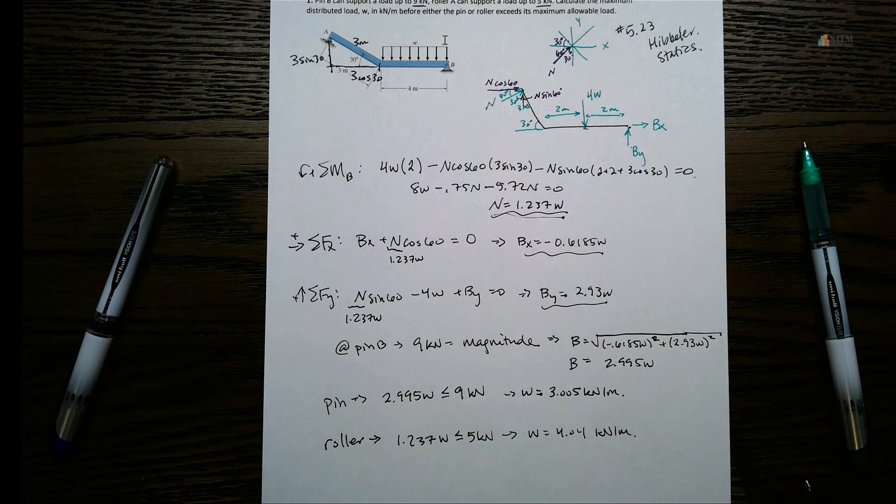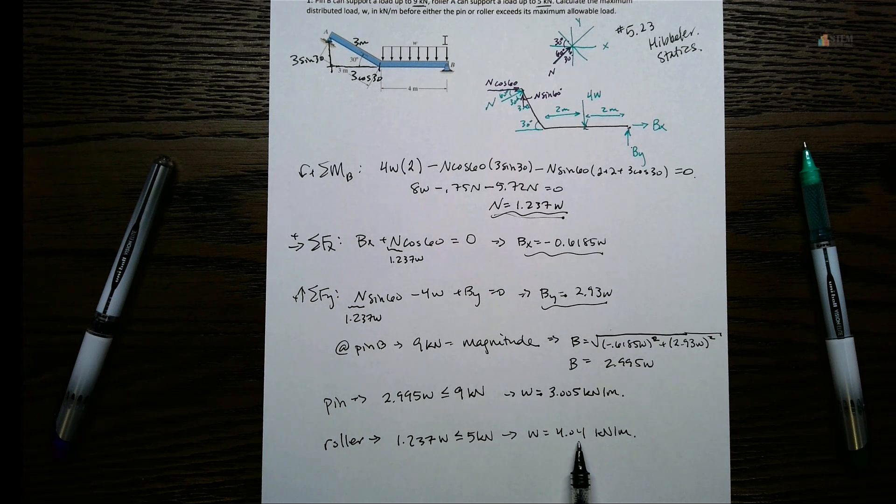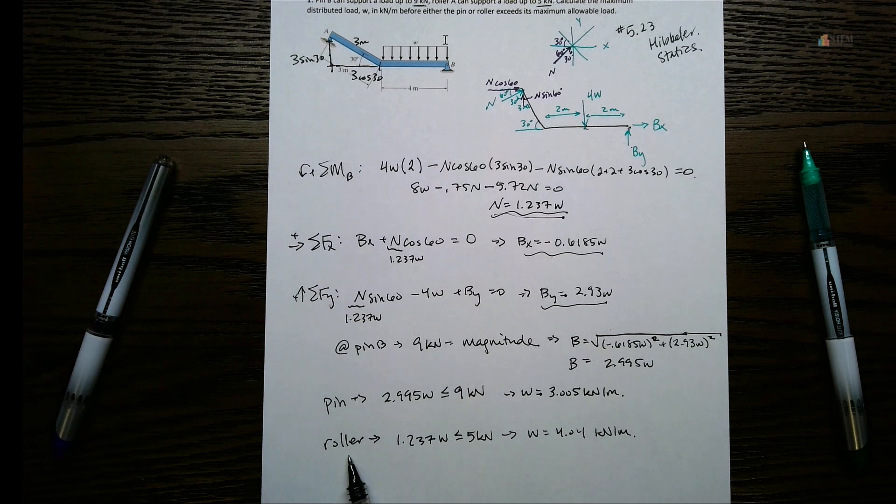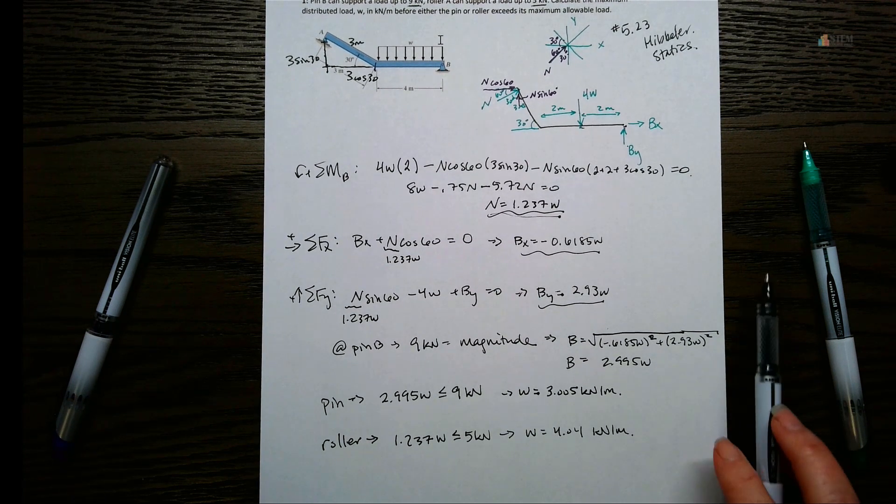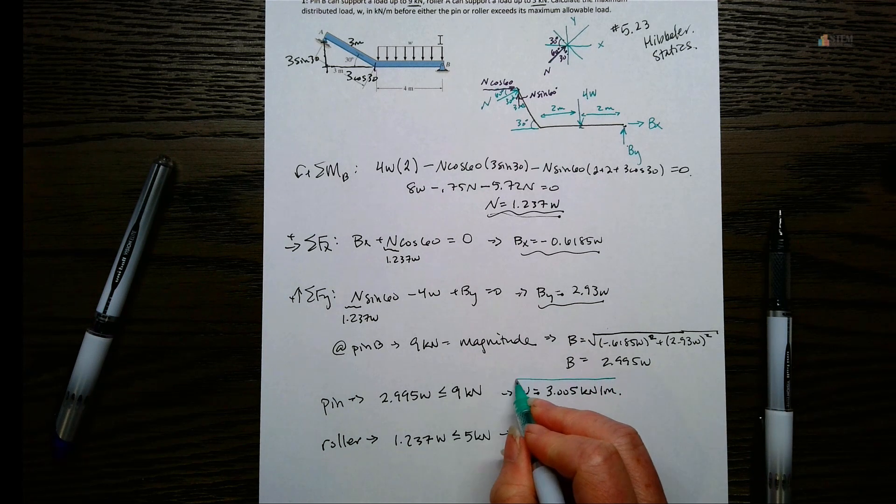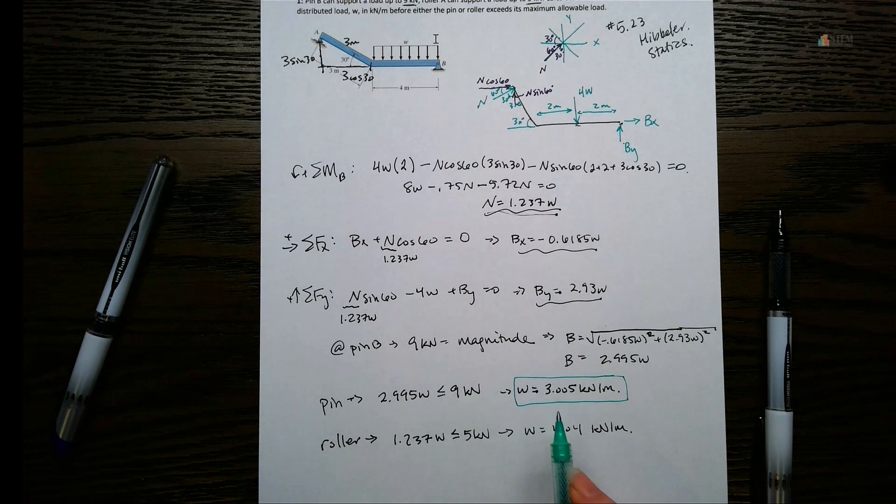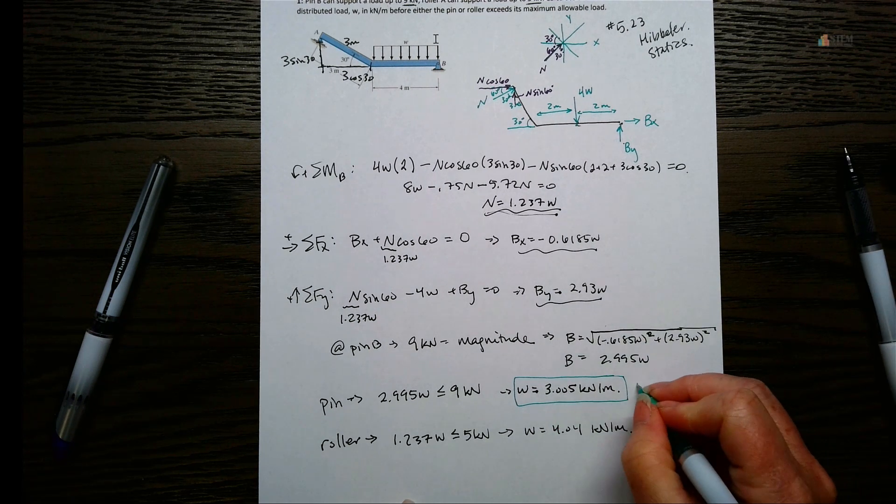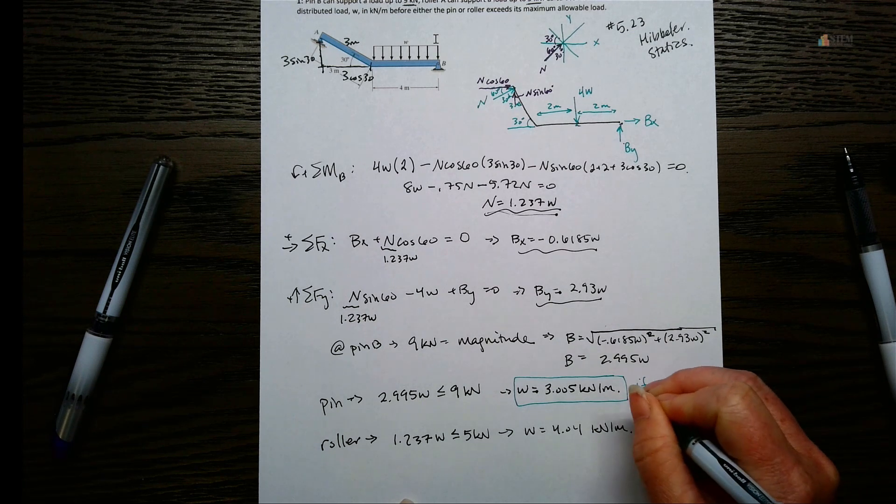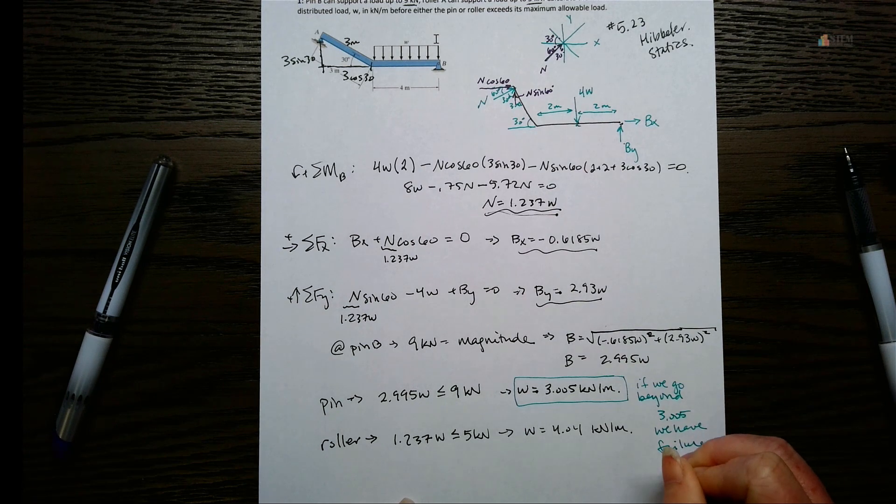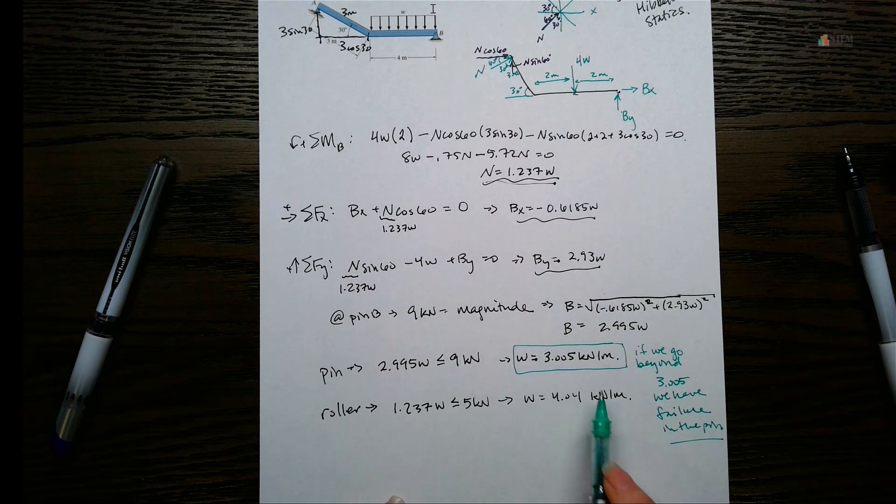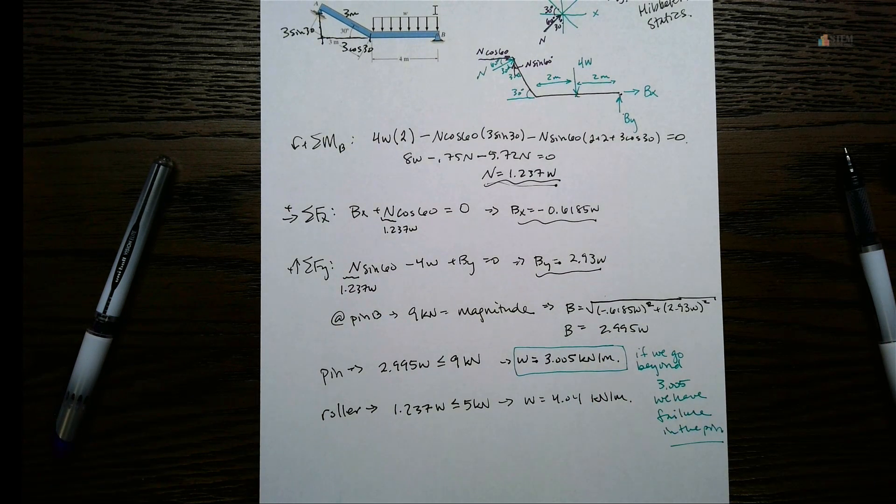So we have two options. So which one would we pick? Well, let's think about it. If I had 4.04 kilonewton meters, that meets the roller's requirement. But does it meet the pin requirement? No. Because this one could only be 3.005. So what we want to do, is when we're finding the max W, is we want to pick the lowest value. Because once we go beyond this value, we will have failure in the pin. So that's why we picked the lowest value. So remember, when we're looking for the max W, we're going to pick the minimum. And that's if we're given more than one force condition like we had here.